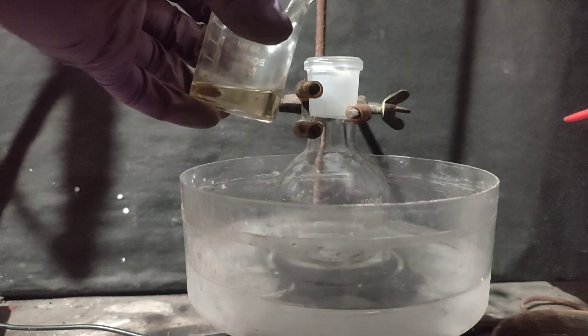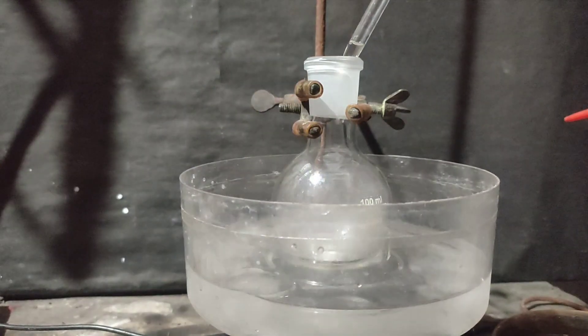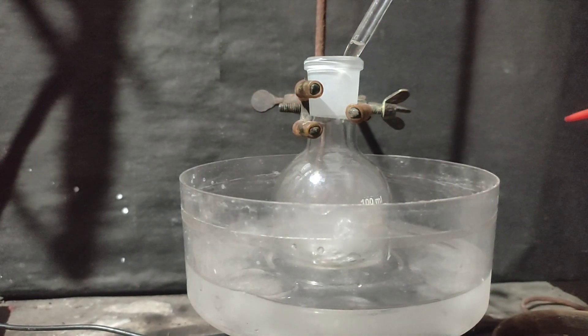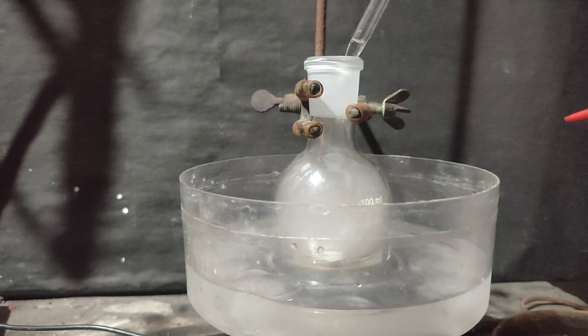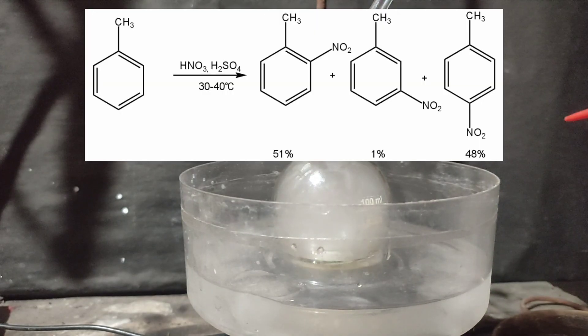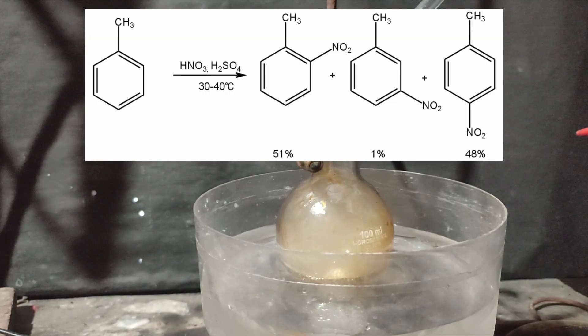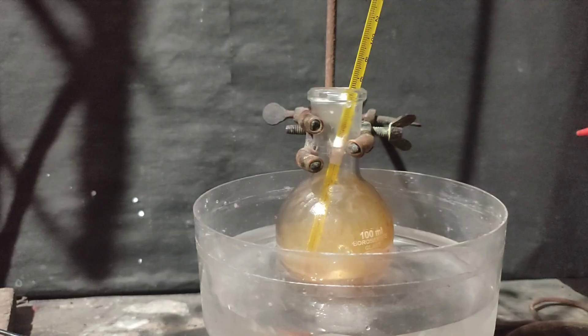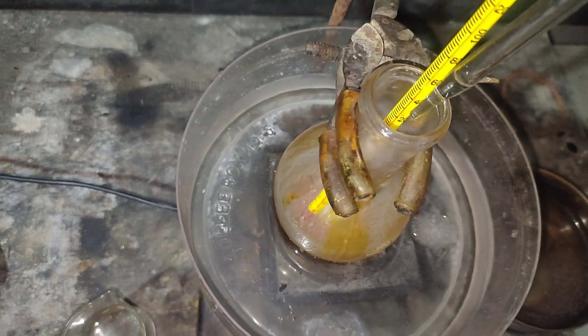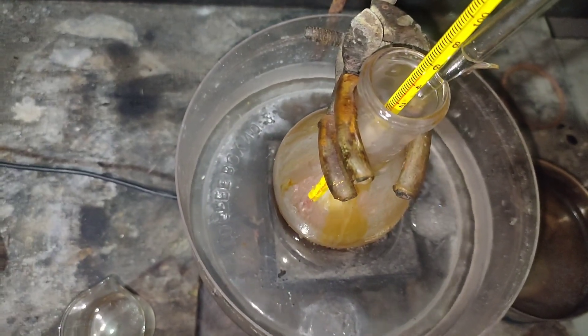Meanwhile I set the RB flask containing toluene in an ice bath on a magnetic stirrer and started adding the nitrating mixture dropwise, not letting the temperature rise above 30 degrees Celsius. At this moment toluene gets mononitrated to form ortho and para-nitro isomers along with trace amounts of meta-nitrotoluene. For monitoring the temperature, I carefully placed the thermometer inside the reaction mixture so the stir bar does not collide with it.